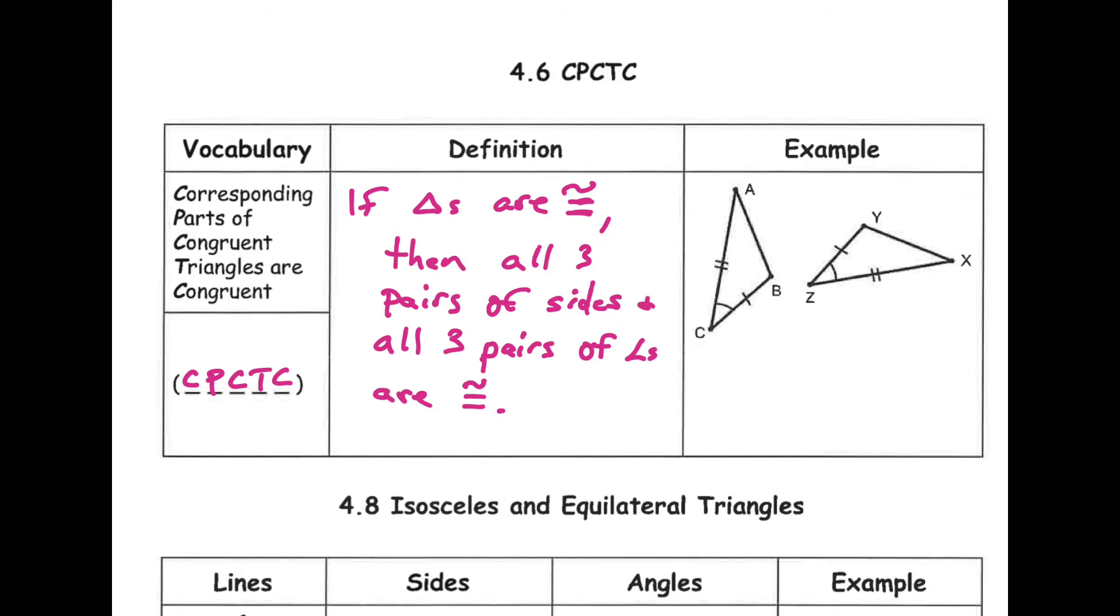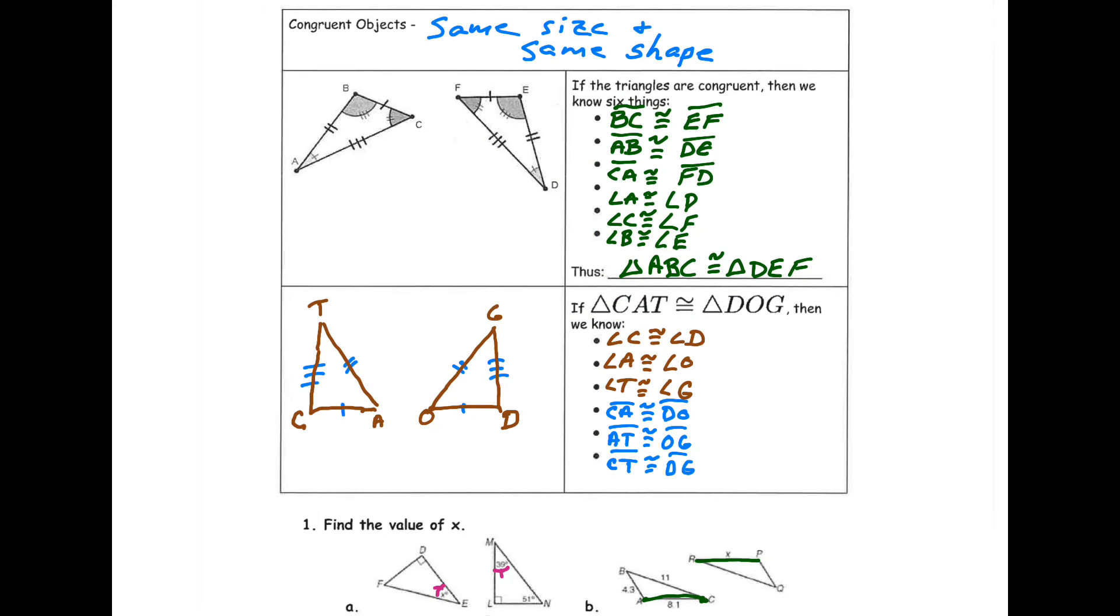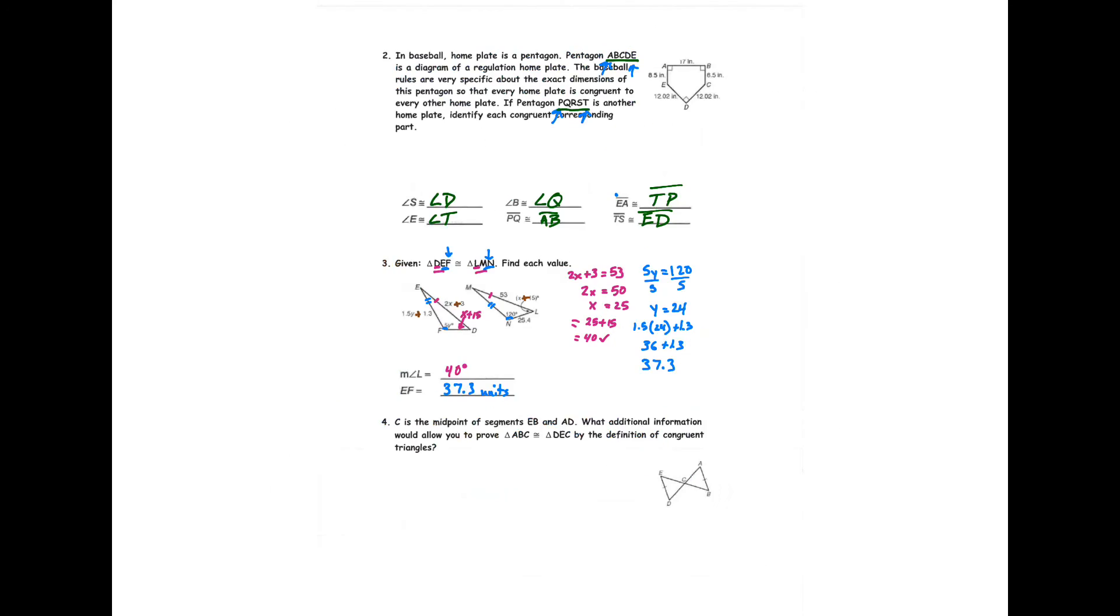So, it brings us back to, if I go back in the notes to 4.3, this day it brings us back to this, saying that if we have triangles that are congruent, then we know all six of these things. We know each angle is congruent, and we know each pair of sides that corresponds are congruent as well. So, this is just going to be an extra step in our proof.